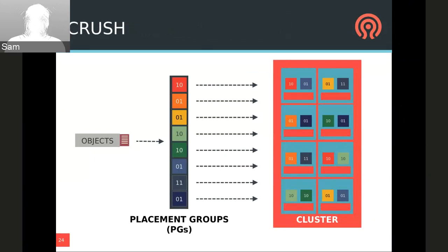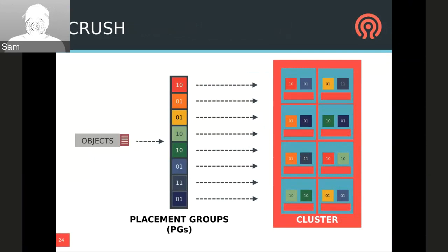Instead, Ceph uses an algorithm called CRUSH. CRUSH takes a thing to be placed and a cluster map and outputs an ordered set of OSDs. Rather than running the object's name itself through CRUSH, we first map the very large number of objects into a smaller number of placement groups, or PGs. When the cluster map changes, we must go through the things placed by CRUSH and move some of them to a new home, but there might be many objects even on a single disk. So instead we first hash the objects into a set of placement groups — typically about 100 per OSD. Each placement group is then run through CRUSH along with the current cluster map to output an ordered set of OSDs. Placement groups also act as the unit of ordering and the unit of locking within each OSD, so the OSD acts more like a collection of placement groups than a collection of objects.